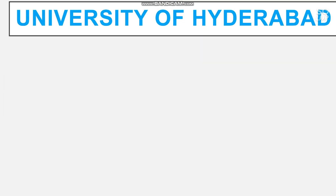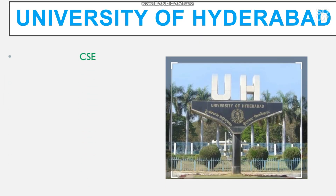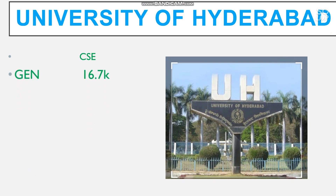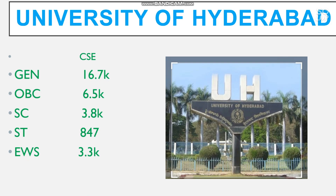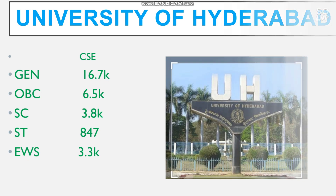Number 3 is University of Hyderabad. Only one branch is available — CSE. Cutoff: General 16,700; OBC 6,500; SC 3,800; ST 847 rank only; EWS 3,300.